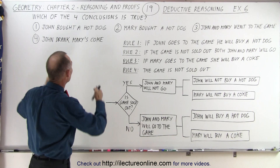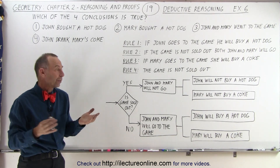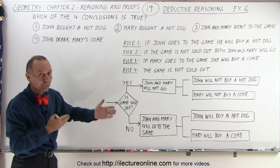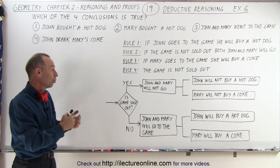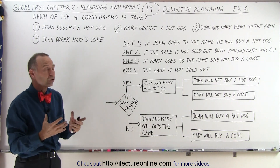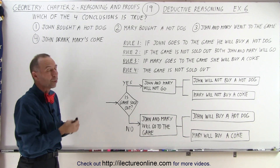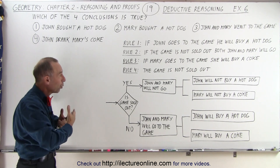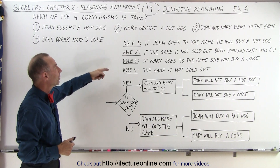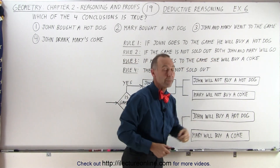It helps to draw a flow chart of the possible chain of events. Starting at some location in the flow chart, we must figure out which of those rules is the primary rule that helps us decide what else may happen. We realize that if the game is not sold out, both John and Mary will go.